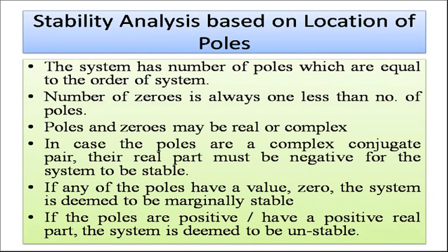We will now look at stability analysis based on the location of poles. The number of poles equals the order of the system — a second order system has two poles. The number of zeros is always one less than the number of poles. Poles and zeros may be real or complex. When poles are complex conjugates, their real part must be negative for stability. If any pole has a value of zero, the system is marginally stable.